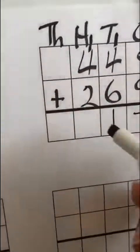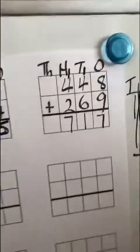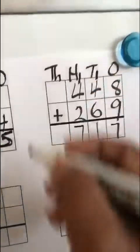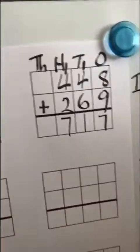So, now we need to add 1 plus 4 is 5, and 5 plus 2 is 7. And we can put 7 because we don't have two numbers. Now, that would take us into...